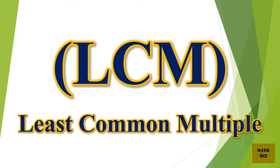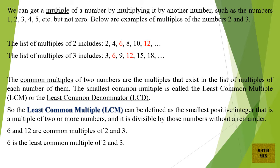LCM — the least common multiple. We can get a multiple of a number by multiplying it by another number, such as the numbers 1, 2, 3, 4, 5, etc., but not 0.